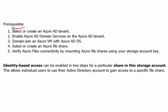Below are the prerequisites to enable identity-based access for a share in a storage account on Active Directory. The first one is that we should have an Active Directory tenant, which we already have. The second step is to enable Azure Active Directory Domain Services on the Azure Active Directory account. Let's see what we have available in the question.